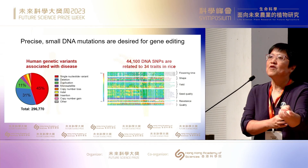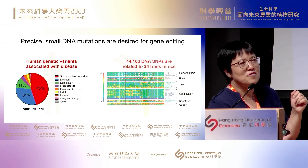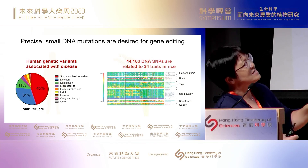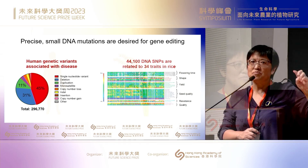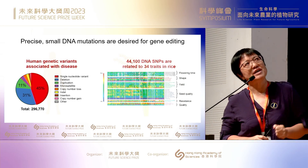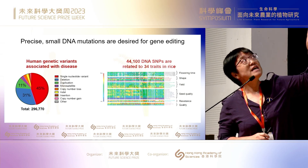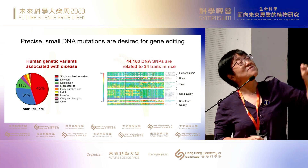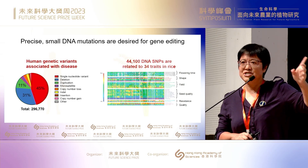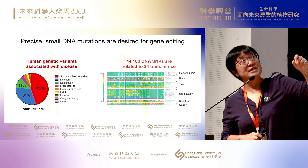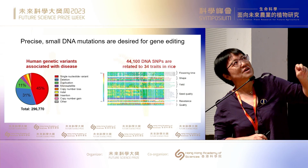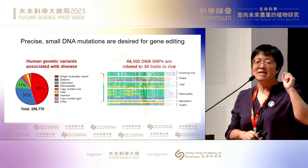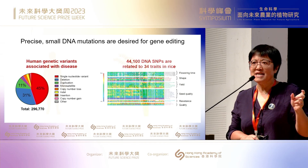Although gene editing is powerful, it is still very much limited by the types of edits it can directly make. Single nucleotide polymorphisms (SNPs) are the most prevalent variants involved in genetic diseases and plant traits. From this figure, you can see nearly 50% of human genetic variants associated with disease are caused by a single nucleotide change, and more than 40,000 DNA SNPs are related to 34 traits in rice. We therefore need tools that can edit small DNA changes precisely and efficiently.